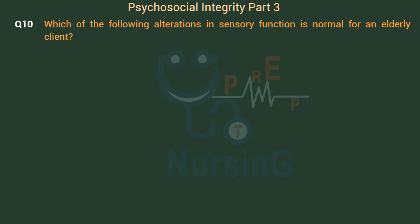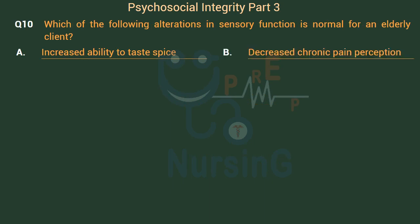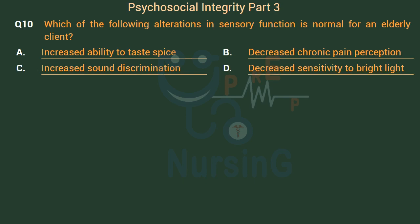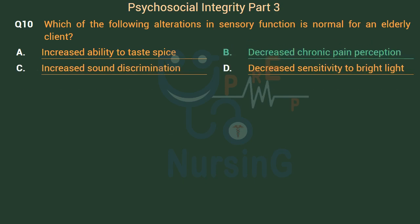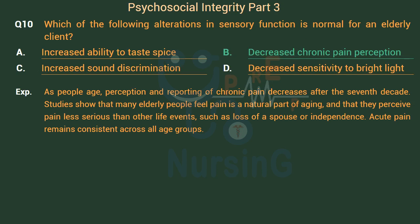Which of the following alterations in sensory function is normal for an elderly client? Option A: Increased ability to taste spice. Option B: Decreased chronic pain perception. Option C: Increased sound discrimination. Option D: Decreased sensitivity to bright light. The right answer is Option B: Decreased chronic pain perception. As people age, perception and reporting of chronic pain decreases.